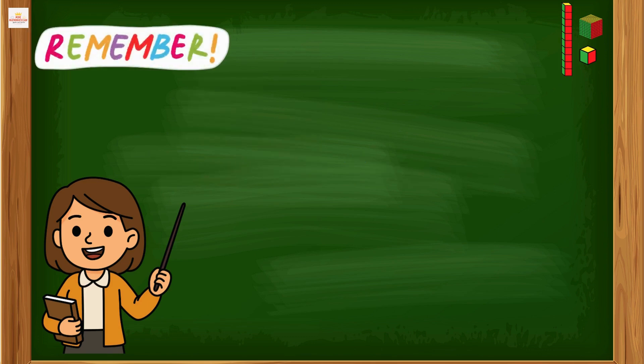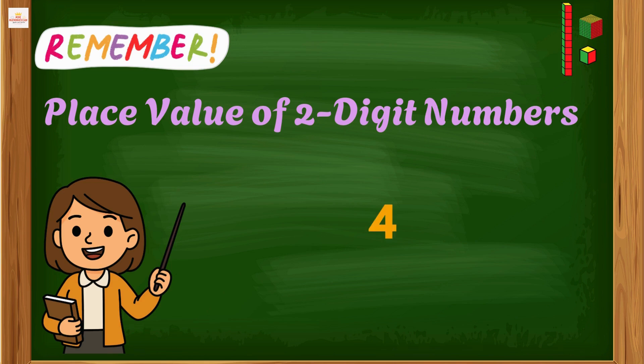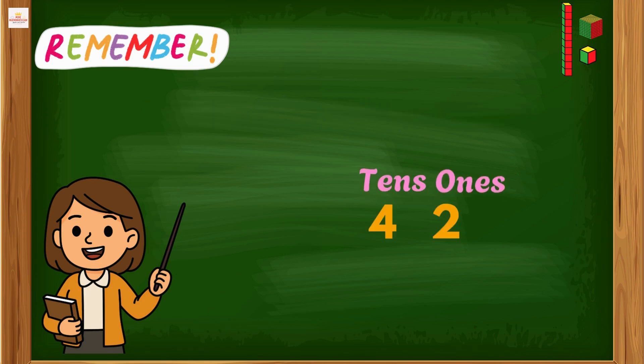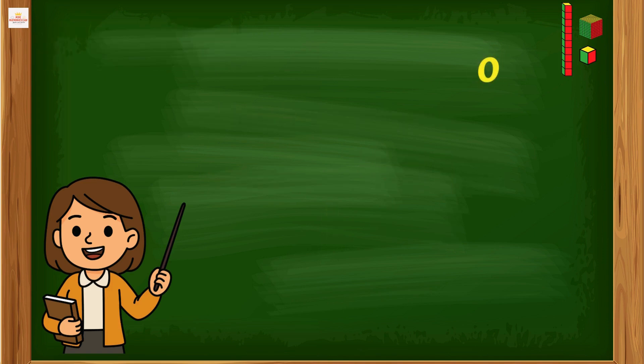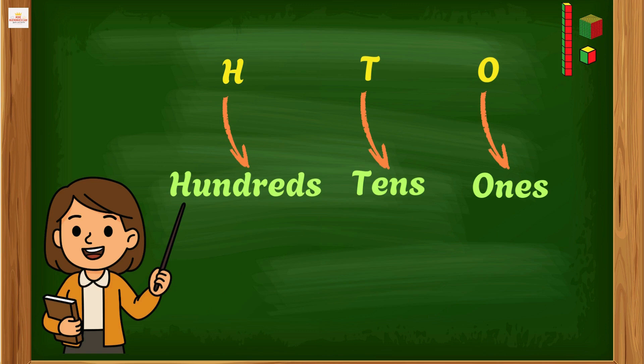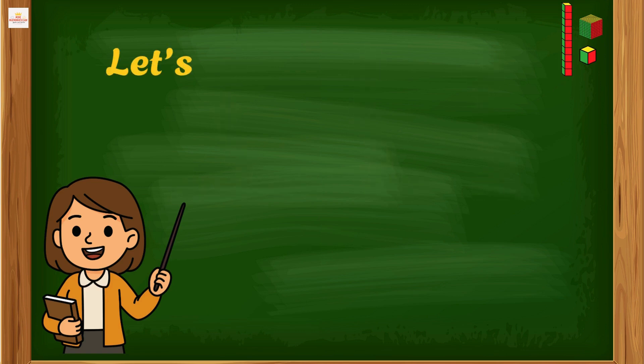Remember when we learned place value for two digit numbers? We had tens and ones. Now in three digit numbers, a new place joins the number family: hundreds. We use O for ones and T for tens. We also use H for hundreds, and it is on the left side of the tens.